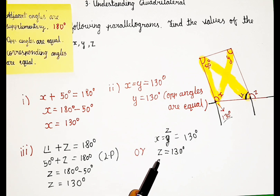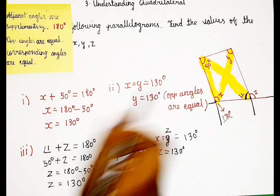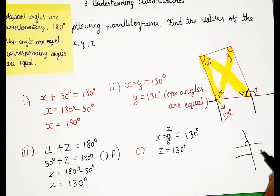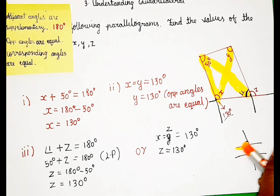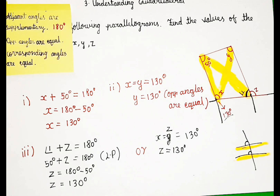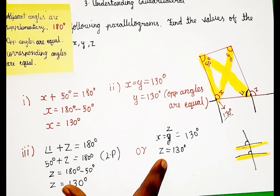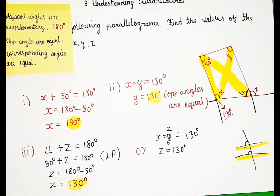You can use any one method — both are correct. So we got the values: x equals 130 degrees, y equals 130 degrees, z equals 130 degrees. Finally we solved it. Thank you guys for watching this video. Please like this video, share it with your friends, and subscribe to our YouTube channel. Bye bye.